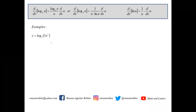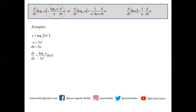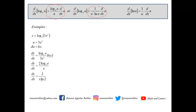For example, find the derivative of y equals log of 3x² to the base 2. Here u equals 3x² and du equals 6x. Using the formula, the derivative equals log of e to the base 2 all over 3x² times 6x. Simplifying, that becomes 2 log of e to the base 2 all over x. Alternatively, using the one over u ln a formula, the derivative is 2 over x ln 2.